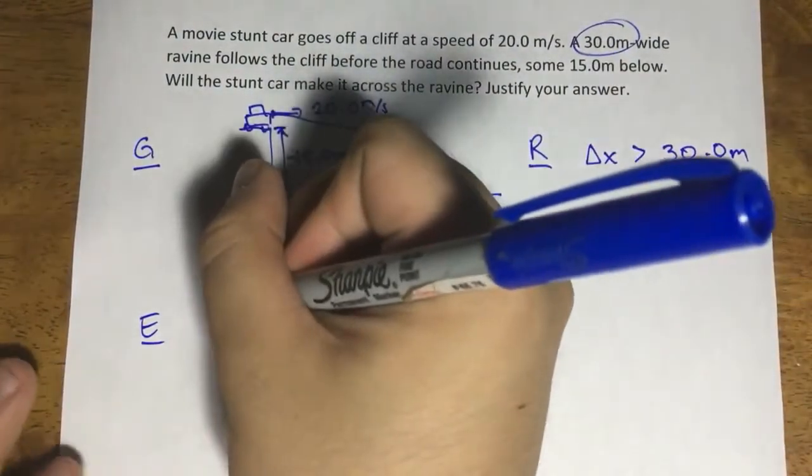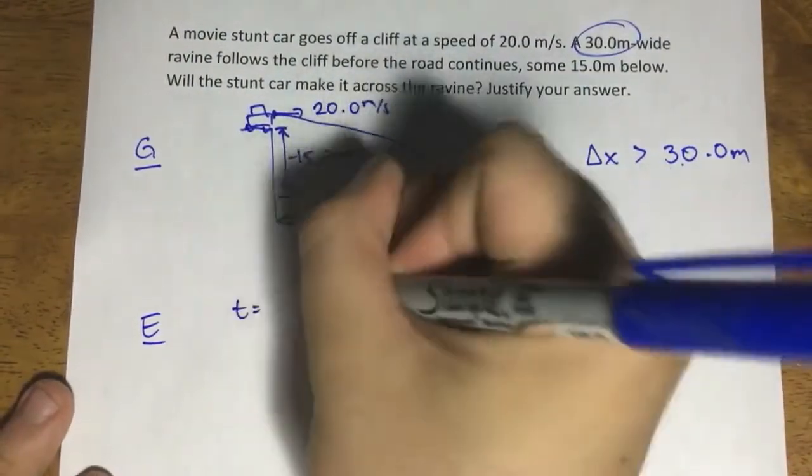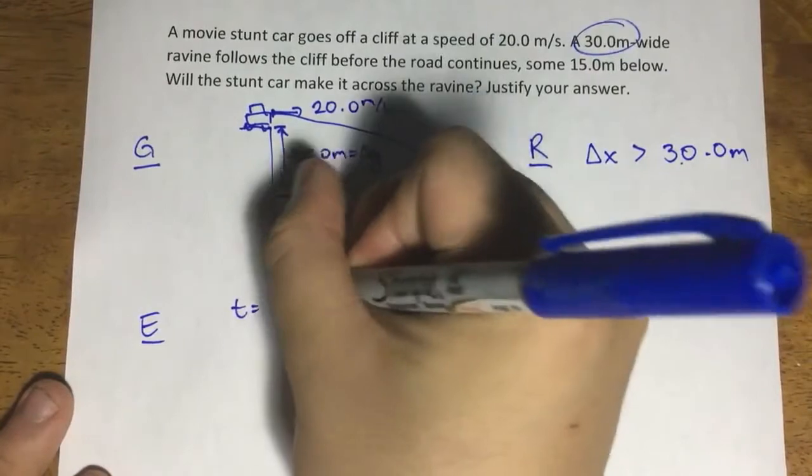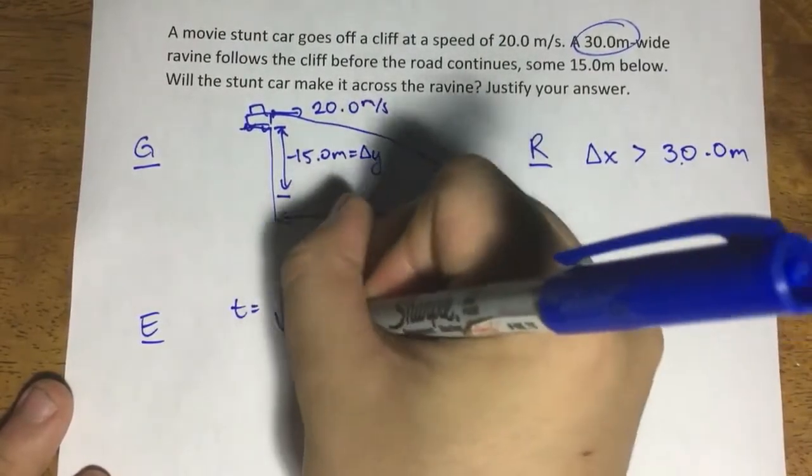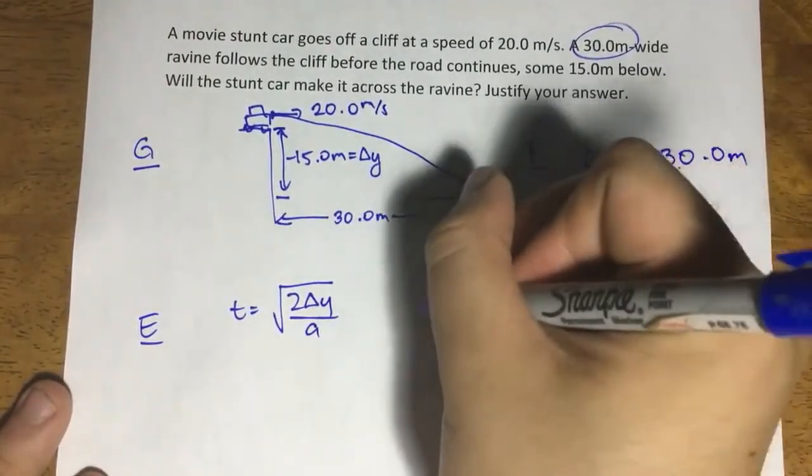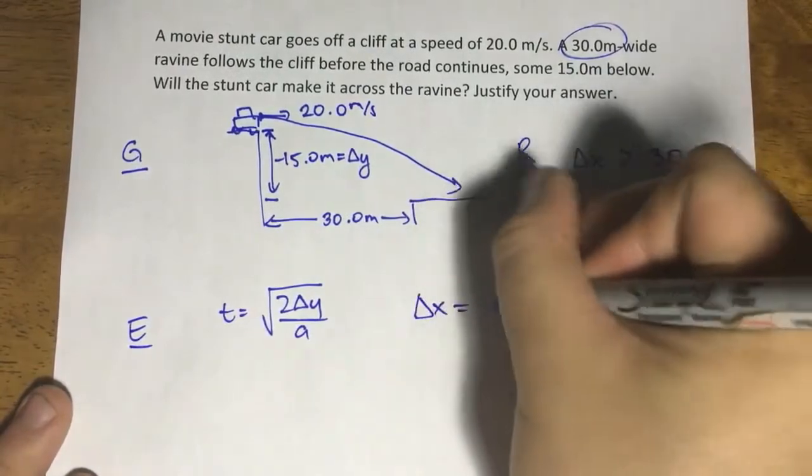So again, we can use the simple equation T is equal to square root of 2 delta y over A. And we can also use delta x is equal to VI times T.